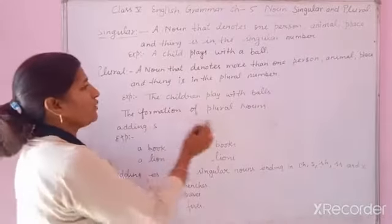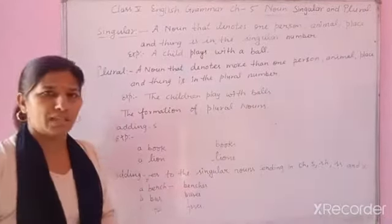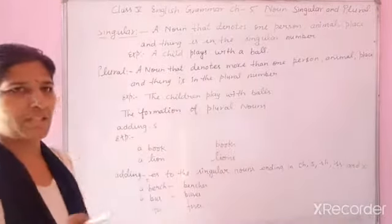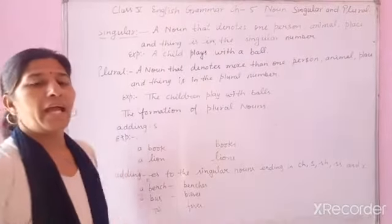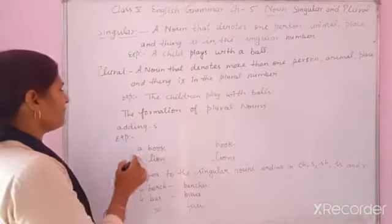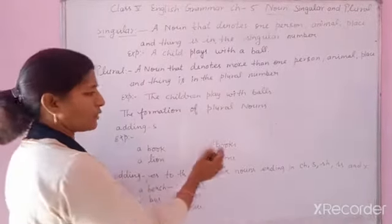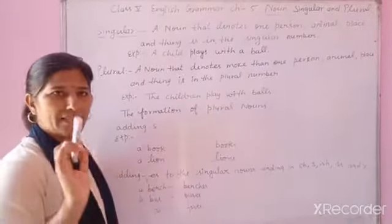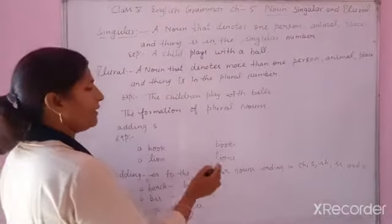For formation of plural nouns — ab hum singular se plural kaise change karein, yeh bataaenge. First, by adding S: for example, 'a book' becomes 'books', and 'lion' becomes 'lions' — only S add karke.